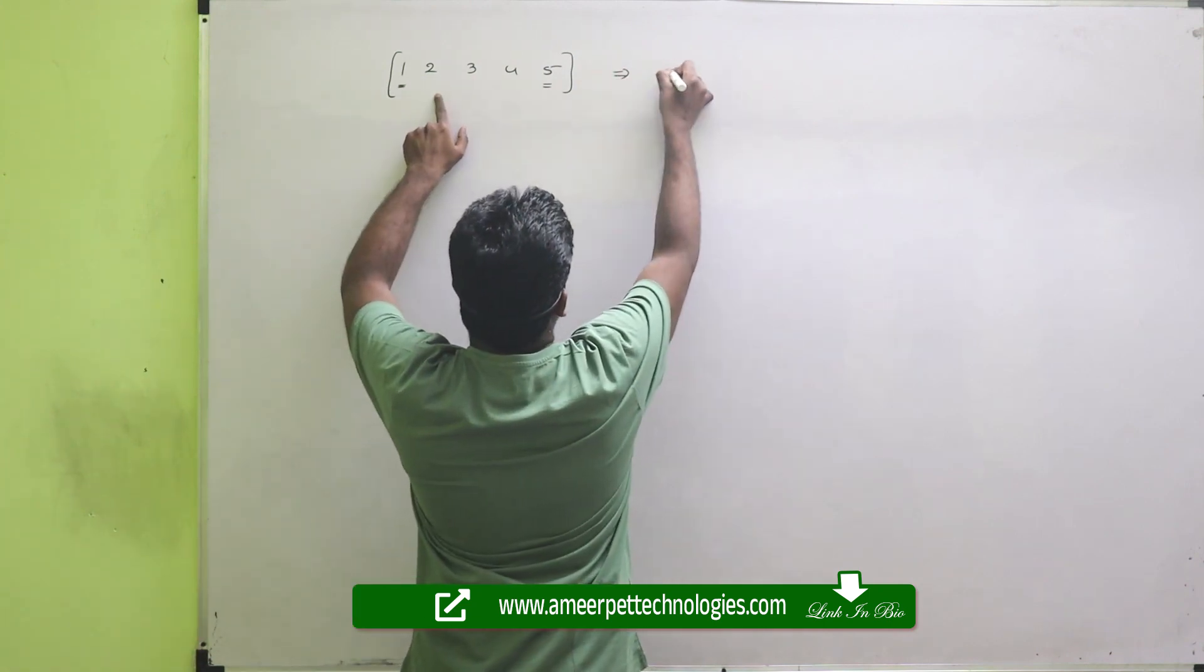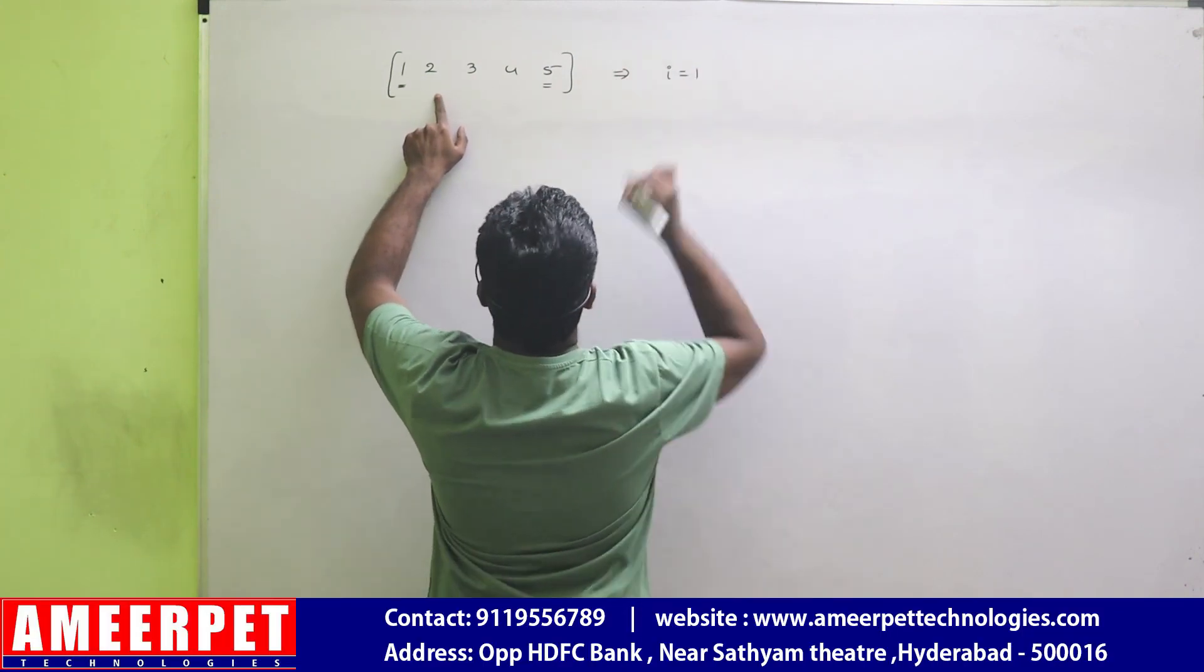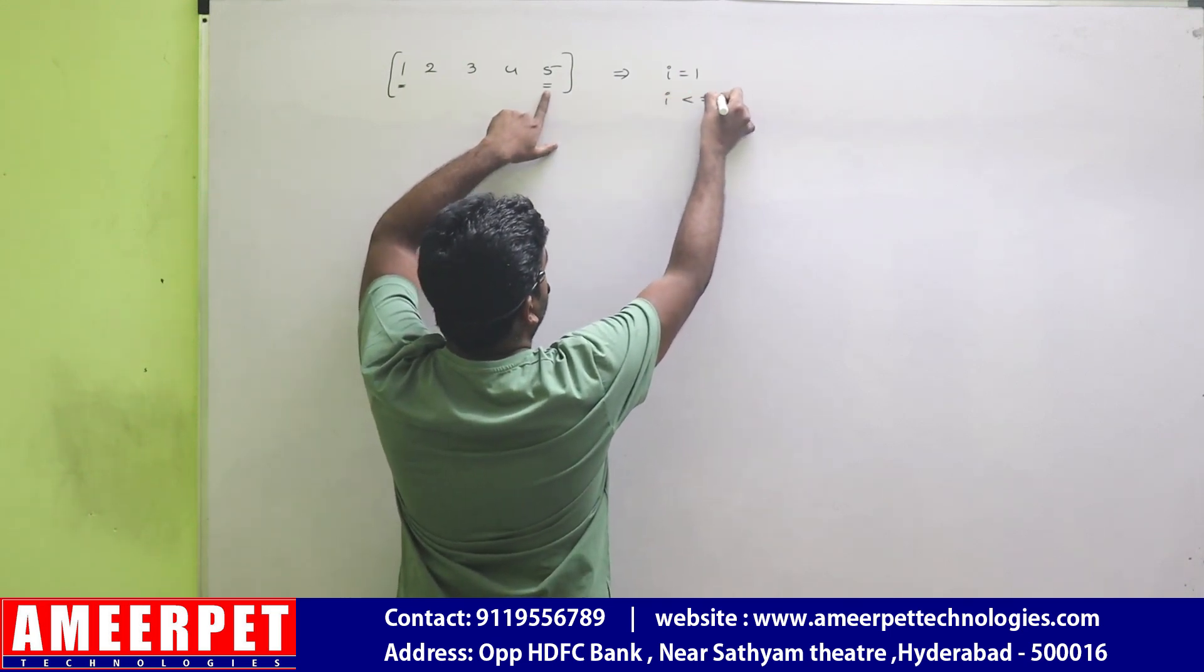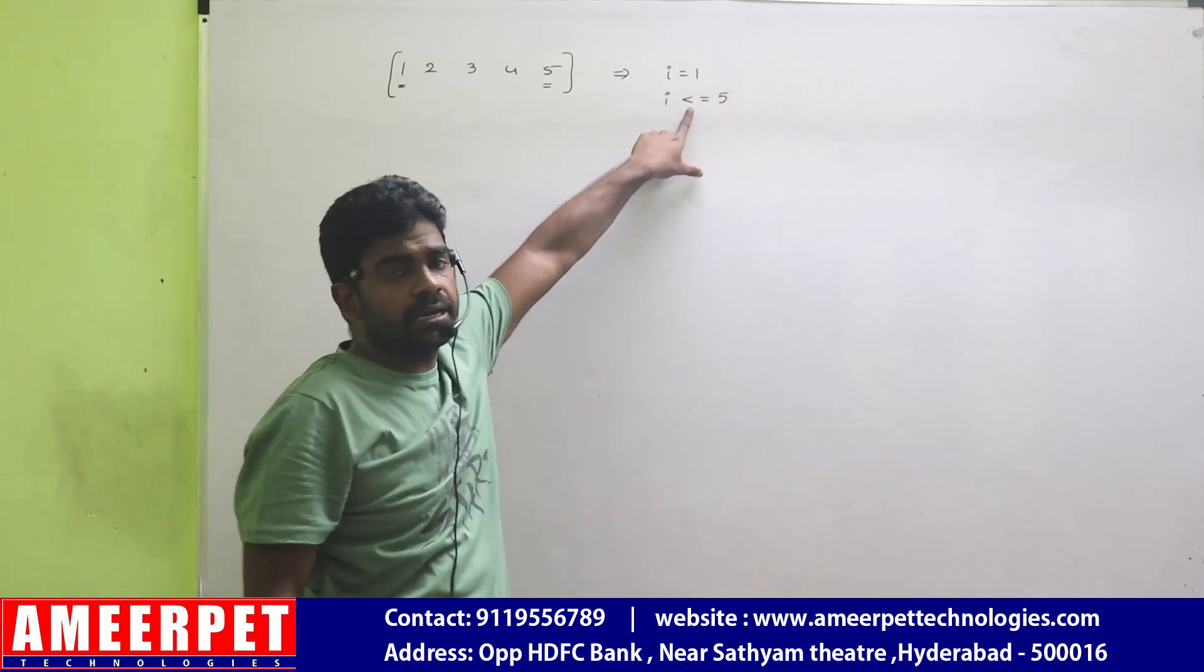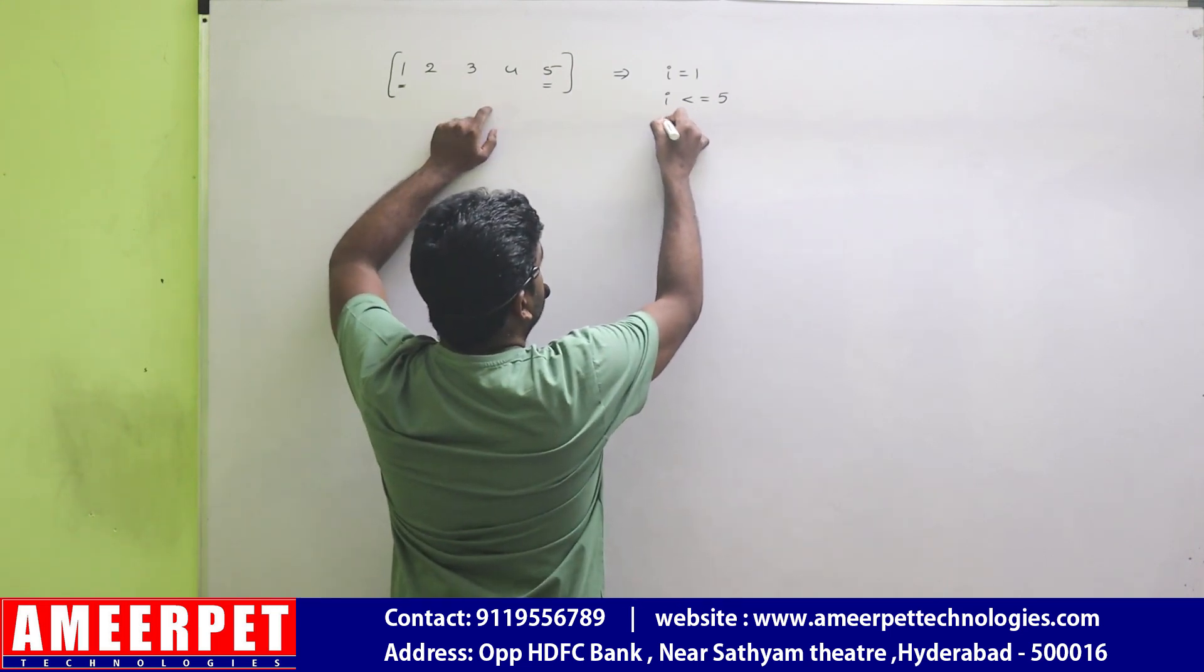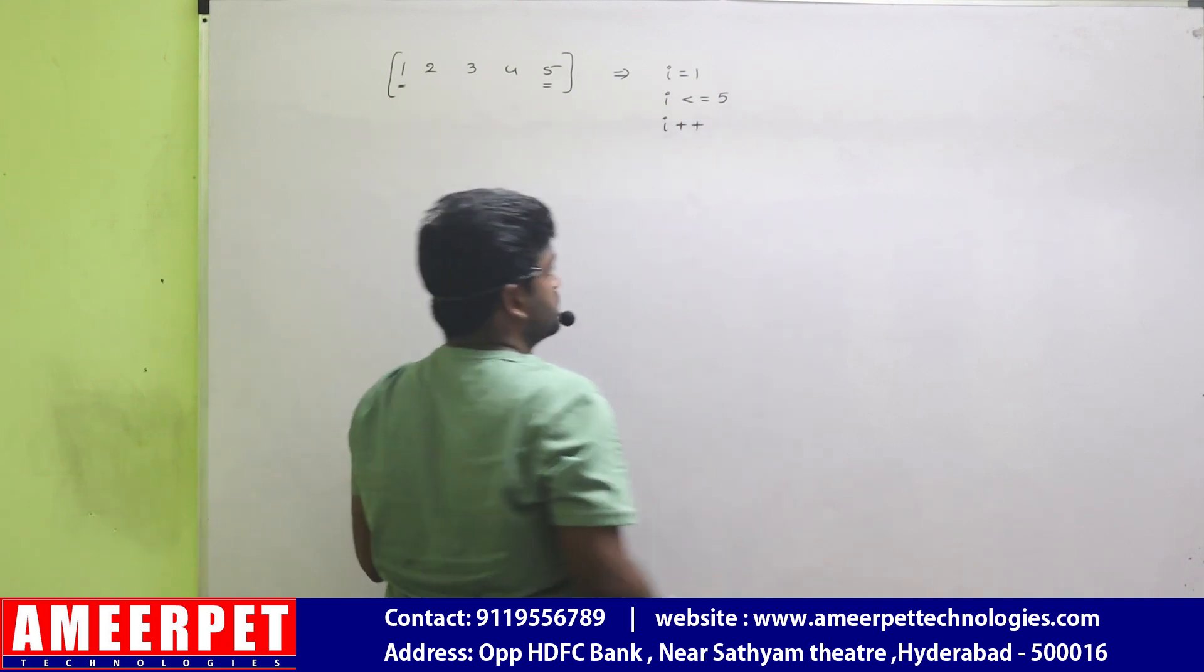Suppose if I want to display 1 2 3 4 5, now I am using for loop. As we know, what is the starting point and what is the ending point? Clearly I mentioned in the last video. So starting point is what? I starts with 1. Ending point is what? I less than or equals to 5. Very important. If it is increasing order, it is less than or equals to 5. And as it is increasing order we are using I plus plus.